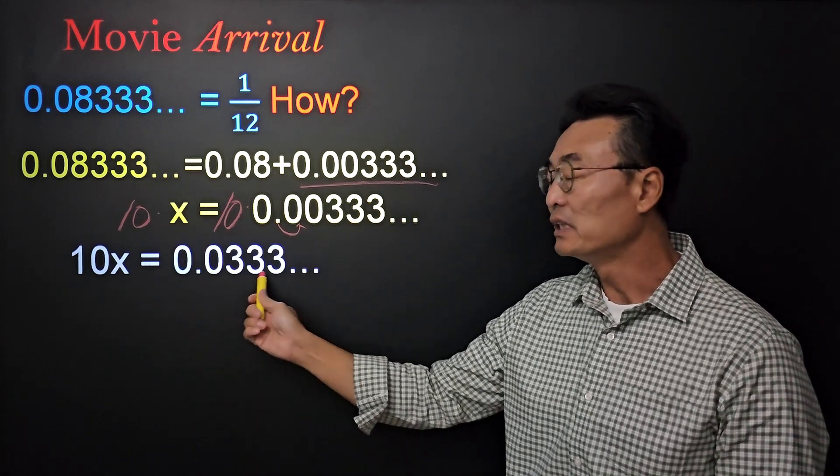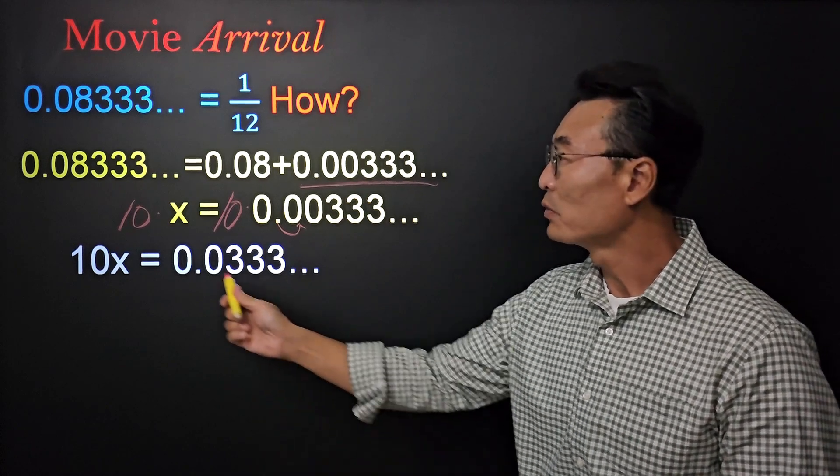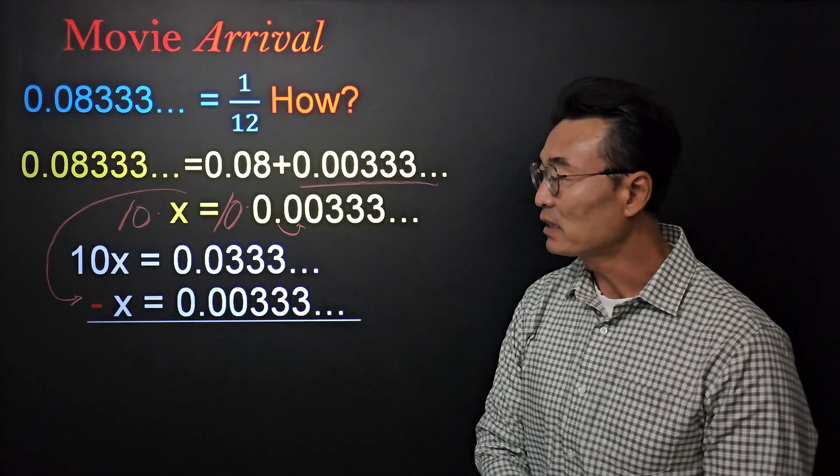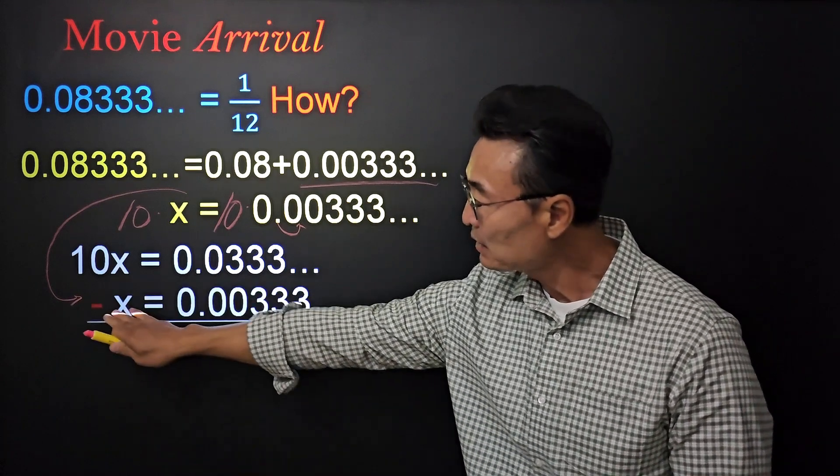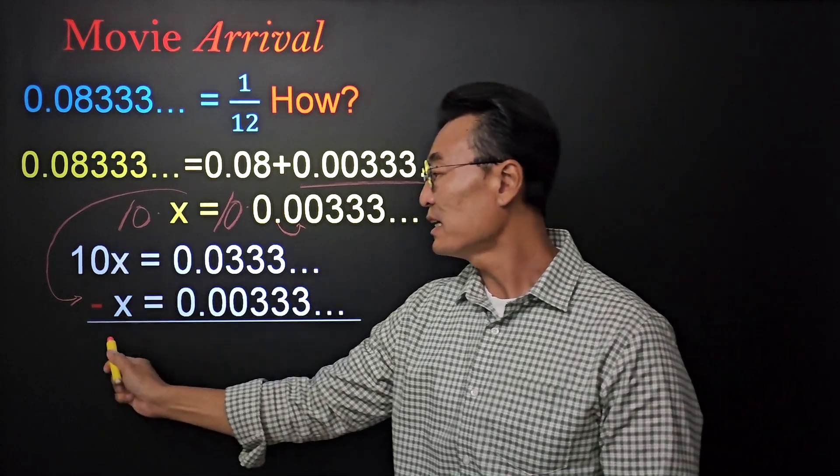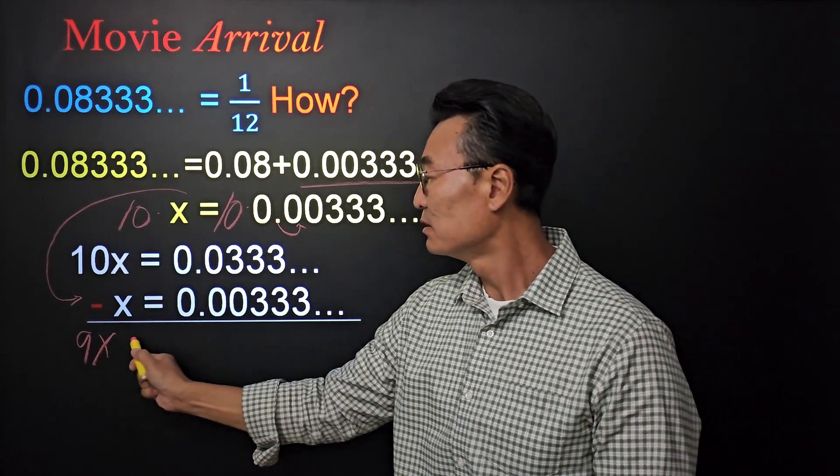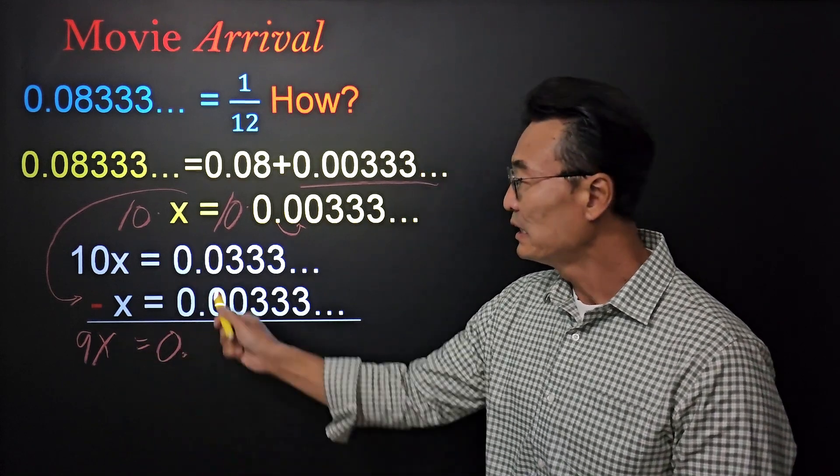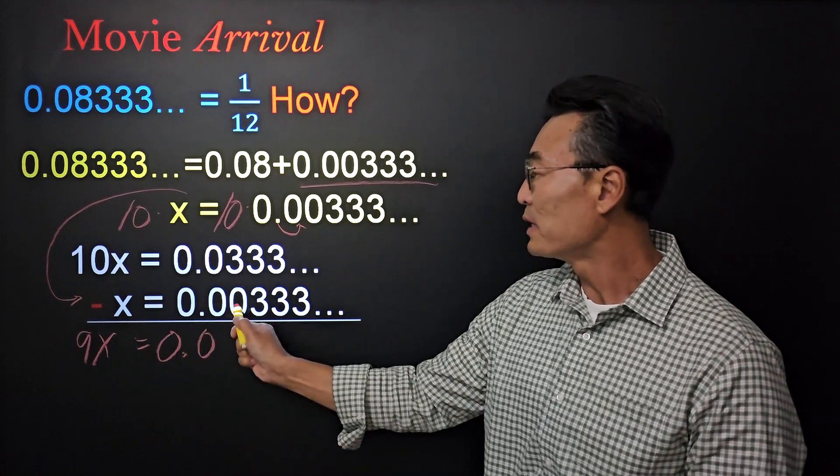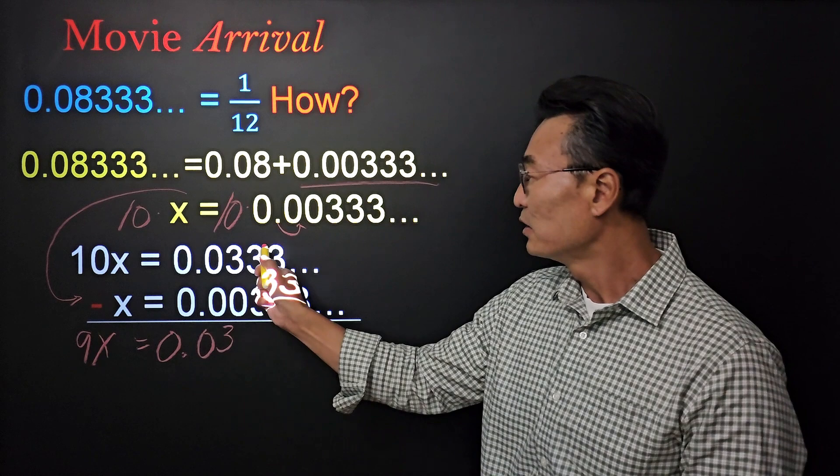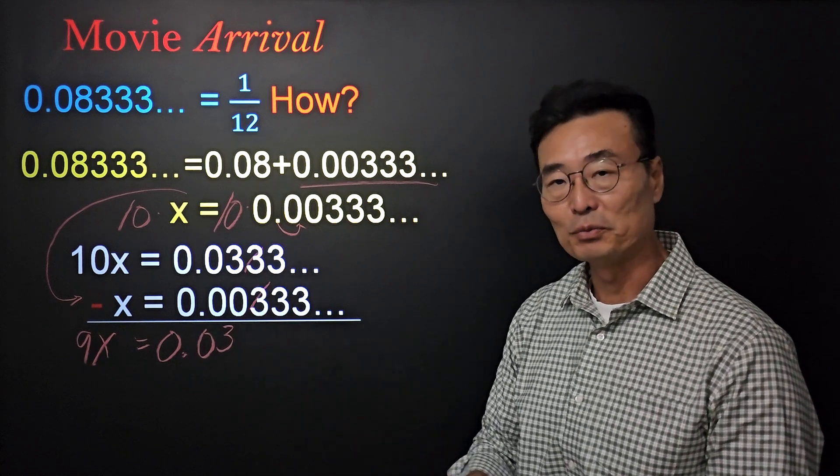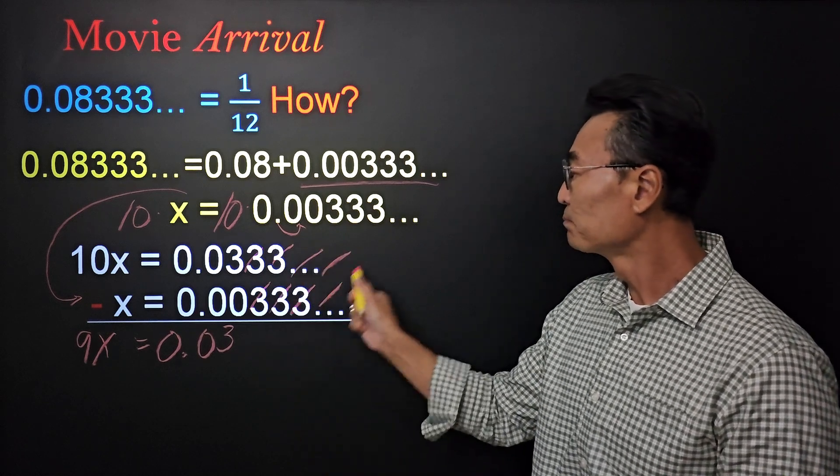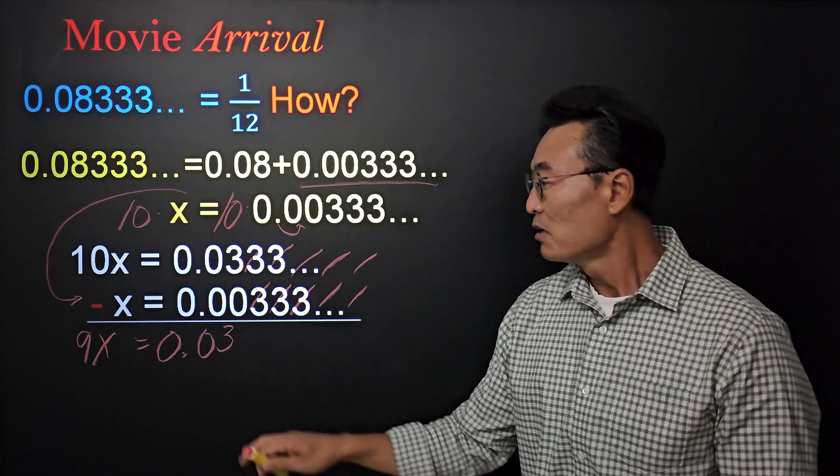Next, what I want to do is take that original x equals 0.003 repeating underneath and subtract. When I subtract 10x and x, we get 9x equals 0. 0 minus 0 is 0, here's our decimal point again, 0 minus 0 is 0, 3 minus 0 is 3, and that 3 and that 3 will cancel each other out when we subtract. This will happen infinitely. Notice we do not have a repeating decimal anymore since the repeating portions have canceled each other out.